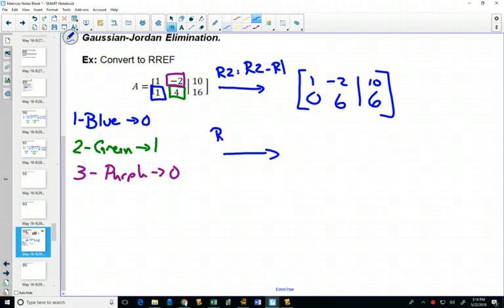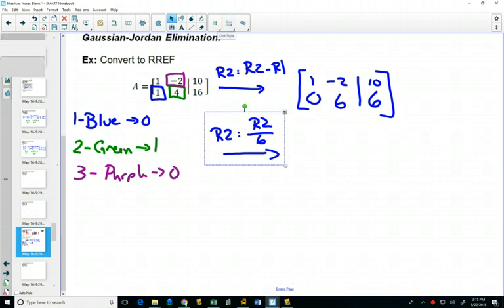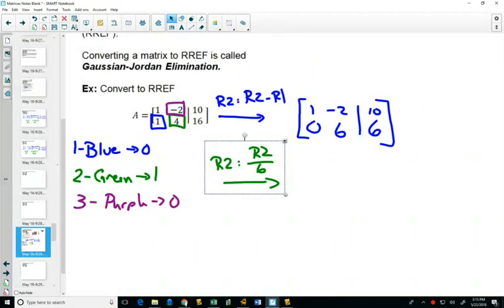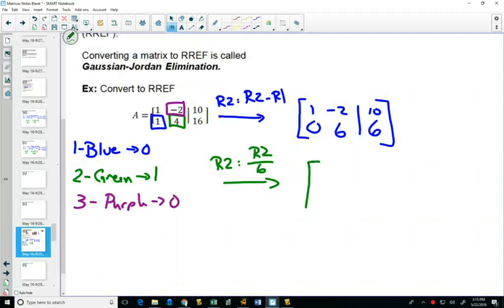I now can take row 2 and divide it by 6 or multiply it by one sixth, whatever way you'd like to write it. That does my green step. 1, negative 2, 10. And now it's 0, 1, 1.